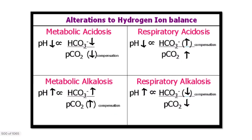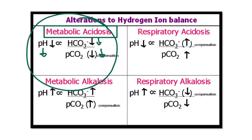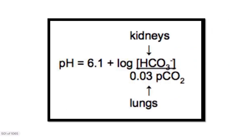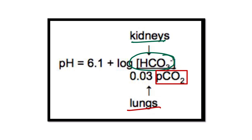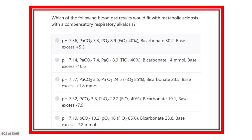In metabolic acidosis, the following changes occur: pH reduces first, then bicarbonate reduces, and partial pressure of carbon dioxide also reduces. All parameters fall together. The bicarbonate level represents the metabolic component and is compensated by the kidney, while partial pressure of carbon dioxide is the respiratory component, compensated by the lungs.